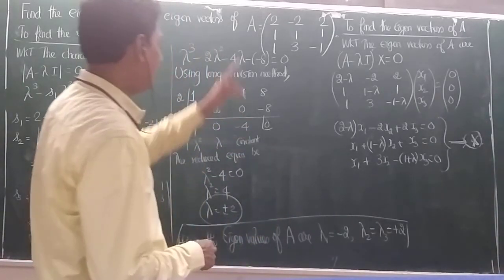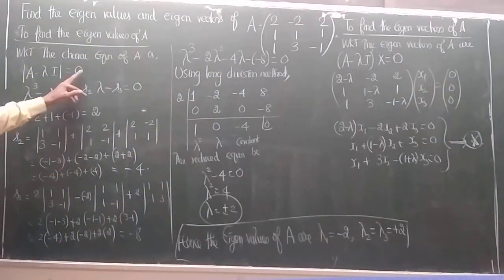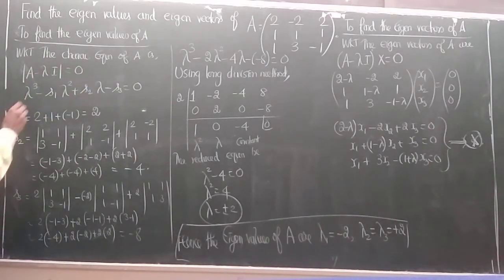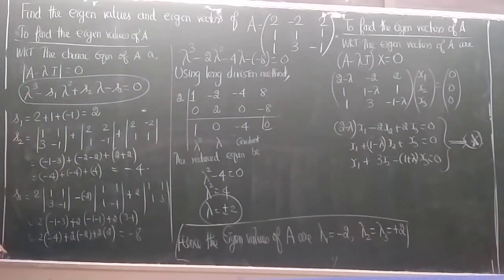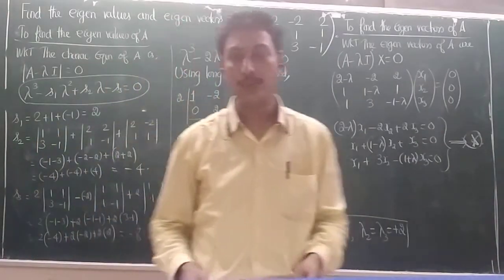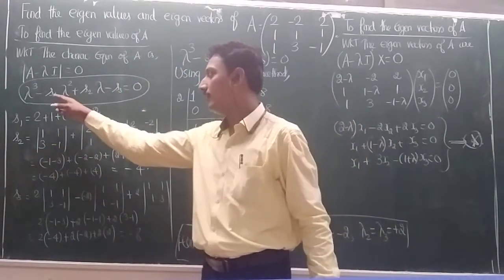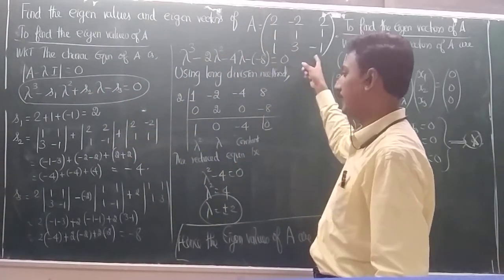For a 3×3 matrix A, the eigenvalues come from det(A − λI) = 0. The characteristic polynomial shortform is: λ³ − S₁λ² + S₂λ − S₃ = 0. Here S₁ represents the sum of the leading diagonal elements: 2 + 1 + (−1) = 2.